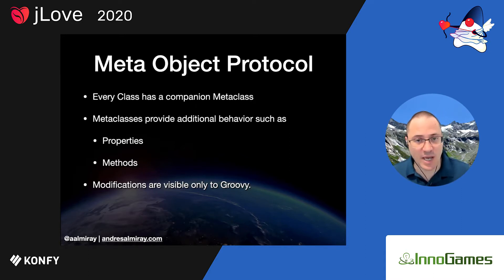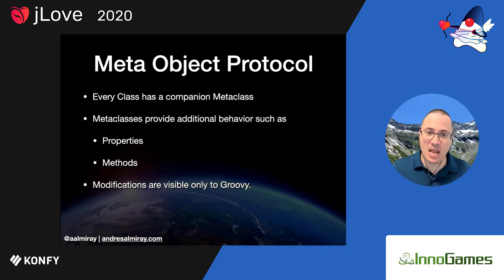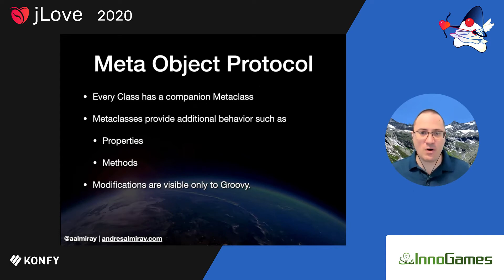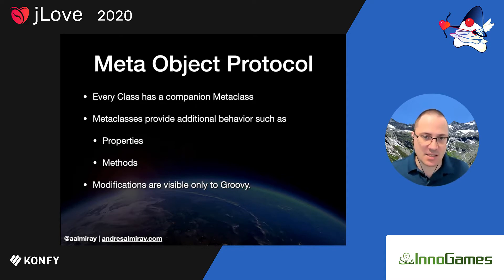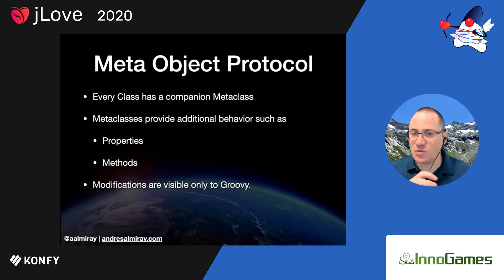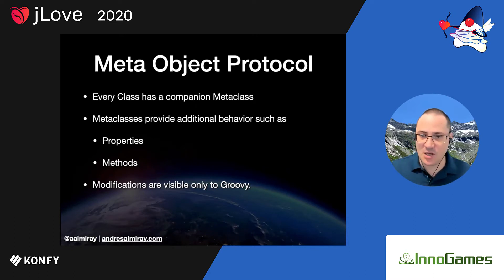This is also true for every Java class, for every class from the standard Java library, or from any other JVM language — Groovy will always give you access to a companion metaclass. What the Meta Object Protocol does is: when you provide a message to a receiver — a method call, a property getter, a property setter — the MOP intercepts it, asks the companion metaclass if it has additional behavior that can react to that message, and if so, the behavior is provided by the metaclass instead of the actual class.